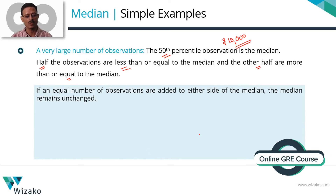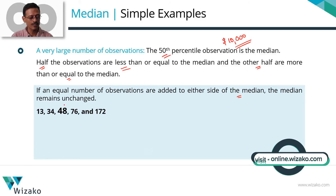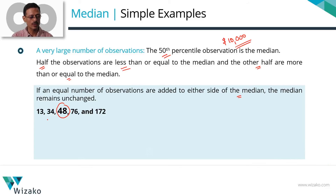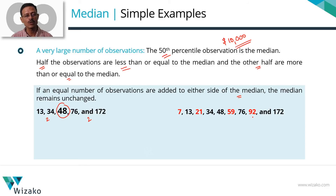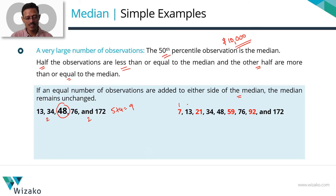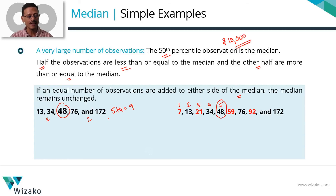Here are two interesting results about median. First: if you add an equal number of observations to either side of the median, the median will remain unchanged. Starting with our five numbers — 13, 34, 48, 76, 172 — written in ascending order with median 48, if we add 2 numbers to the left (say 7 and 21) and 2 to the right (say 59 and 92), we now have 9 observations. The middle number, the 5th from the left, is still 48. So the median remains unchanged when equal observations are added to both sides.